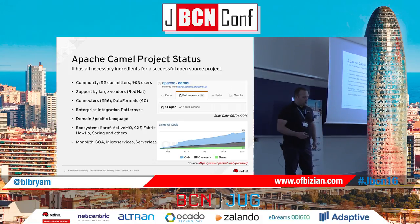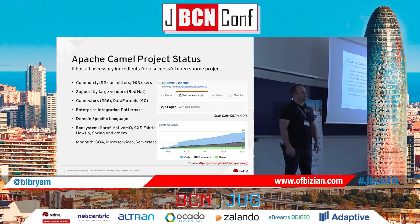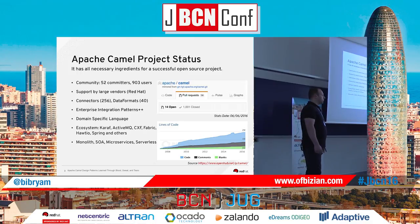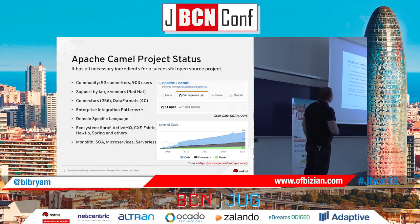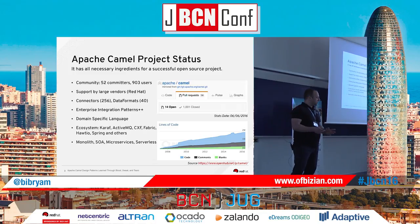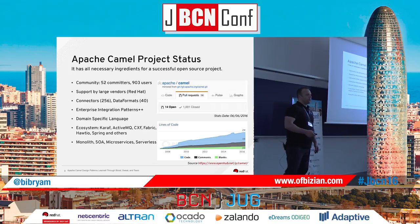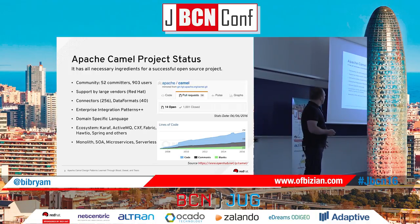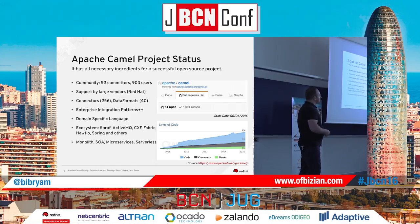One reason I think Camel is getting popular is because it doesn't impose any kind of JVM container. You can use Camel with WildFly, with Karaf, with Spring Boot, or even a static void main. It doesn't impose any container — you can use it the way you want. I've also seen use cases where Camel is used without any routing or enterprise integration patterns at all. For example, if you want to put content on Amazon S3, you can just use the connector directly. It's used in all architectural styles but is quite popular with SOA and microservices, and the team is even experimenting with serverless architectures.